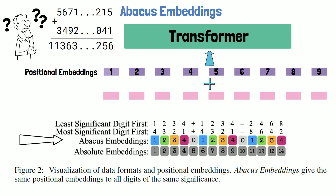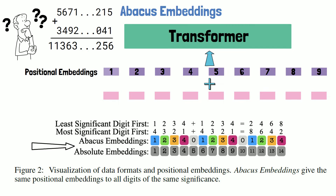On the bottom we see absolute embeddings, which provide information about each token's location in the sequence, but not about the location of each digit inside each number — it is just an ascending sequence. Abacus embeddings, on the other hand, provide the same value for all digits of the same significance. So the first digit of each number is assigned value 1, the second digit of each number is assigned value 2, and so it goes.